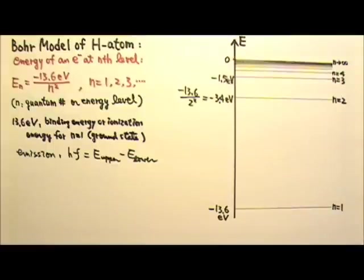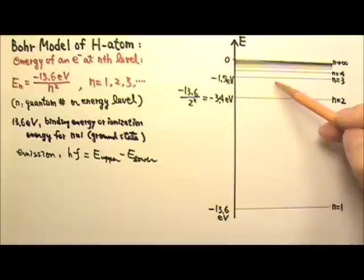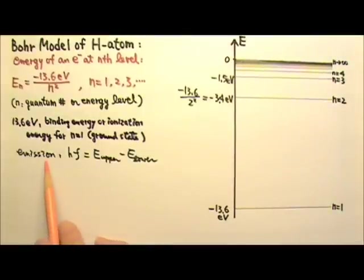A hydrogen atom can give off EM radiation when its electron transitions from an upper energy state to a lower one, like these. The emitted photons would have energy hf that equals to the energy of the upper level minus the energy of the lower level.